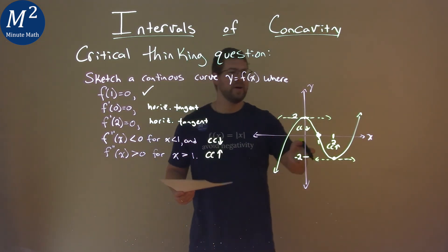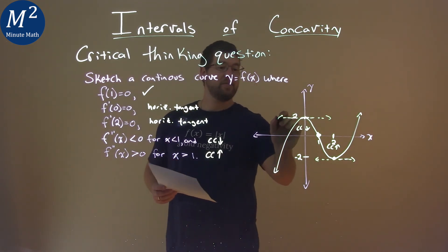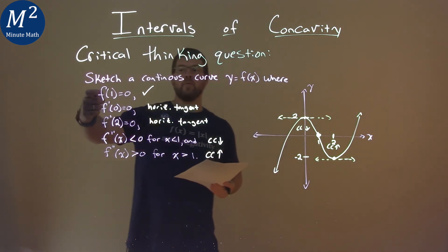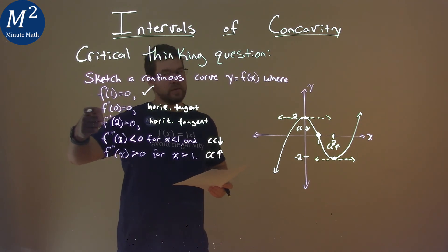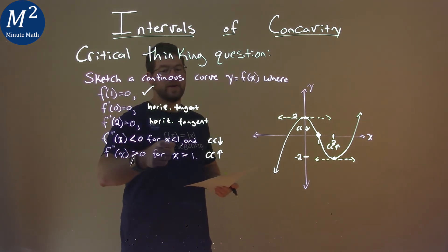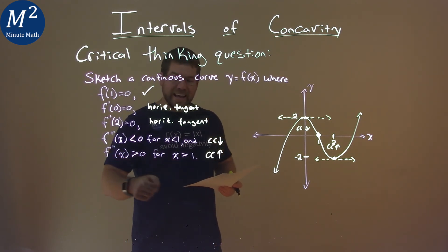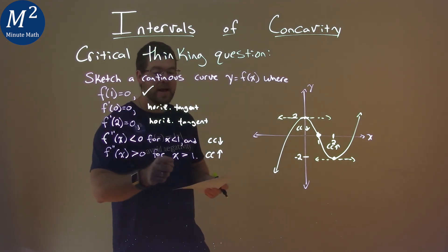And so now we have just sketched a graph that matched all the requirements that is continuous. f of 1 equals 0, f prime of 0 equals 0, f prime of 2 equals 0, f double prime of x is less than 0 for when x is less than 1, and f double prime of x is greater than 0 for when x is greater than 1.